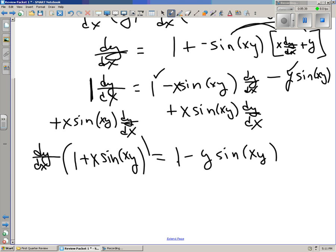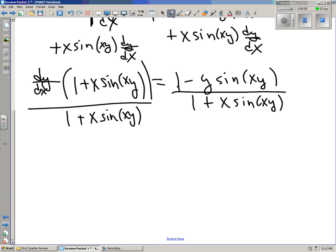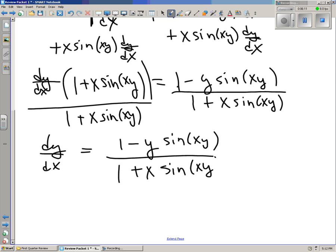And if you think about it this way, I'm going to try to do two steps in one. There's a 1 in front of the dy dx. So we can factor out a dy dx and be left with 1 plus x sine of xy equals 1 minus y sine xy. So 1 minus y sine xy. And then, we can divide by 1 plus x sine of xy.